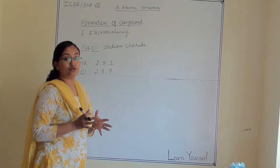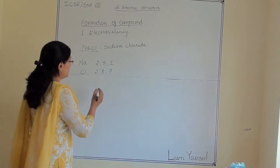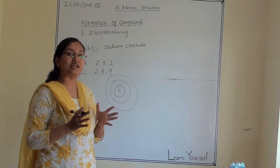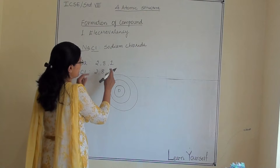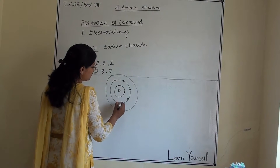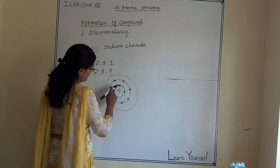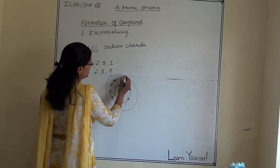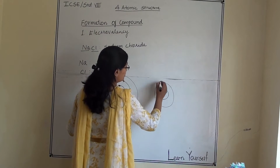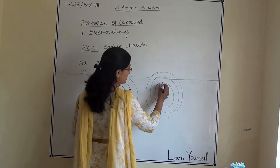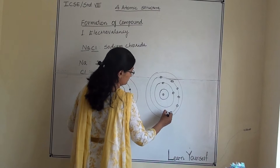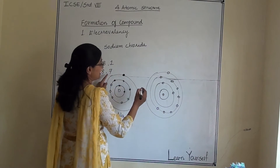Now we will draw an orbital diagram of sodium, showing all the orbitals present. Sodium has 3 orbitals: the first orbit has 2 electrons, the second orbit has 8 electrons, and the last orbit has 1 electron. Now drawing chlorine — chlorine also has 3 orbitals: the first orbit has 2 electrons, the second orbit has 8 electrons, and the last orbit has 7 electrons.